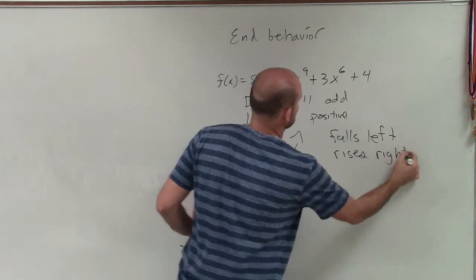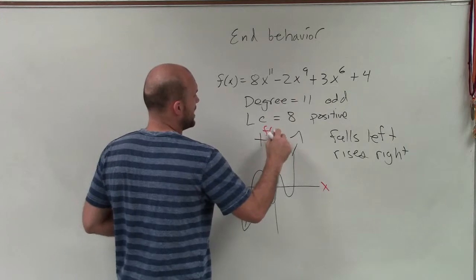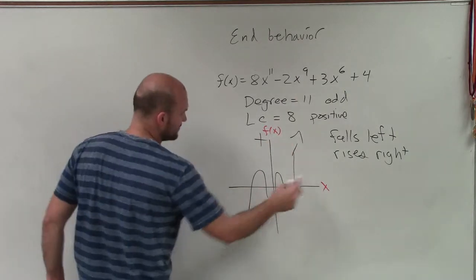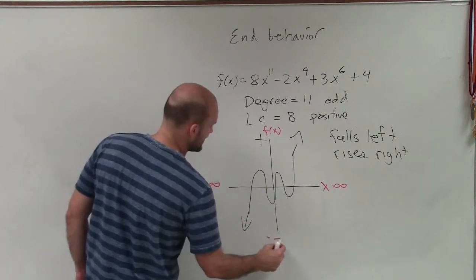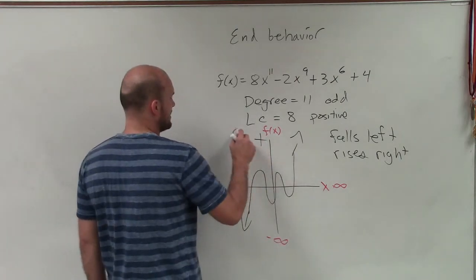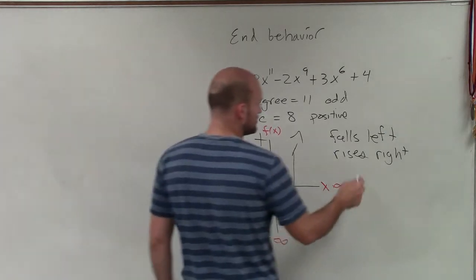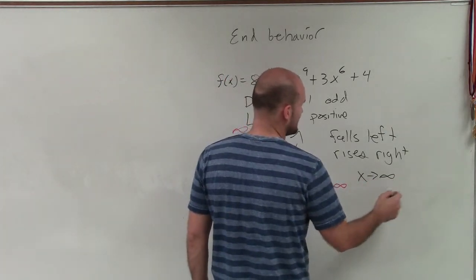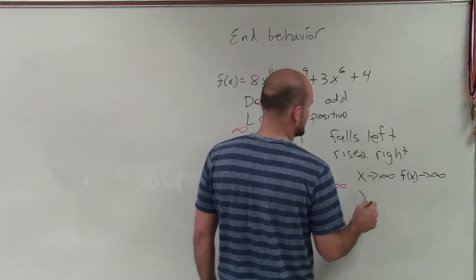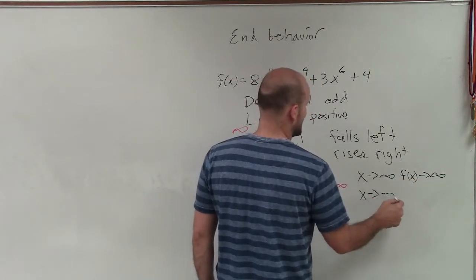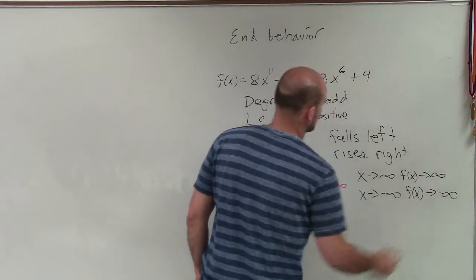We can also write this in a more formal way by taking a look at our x-axis and our f(x)-axis, and knowing that infinity and negative infinity, here would be negative infinity on the f(x)-axis, and here's positive infinity on the f(x)-axis. So I can also write this more formally as saying, as my x-coordinates approach infinity, f(x)-coordinates approach infinity, and as x approaches negative infinity, f(x) approaches negative infinity.